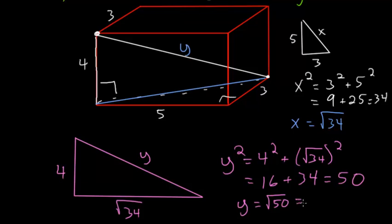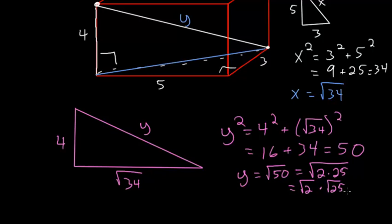We can rewrite the square root of 50 as just 2 times 25, and then separate it into two square roots. So root 2 times root 25. And we do this because we know the square root of 25 is just 5. So our final answer is that the diagonal of this rectangular solid is equal to 5 times the square root of 2.